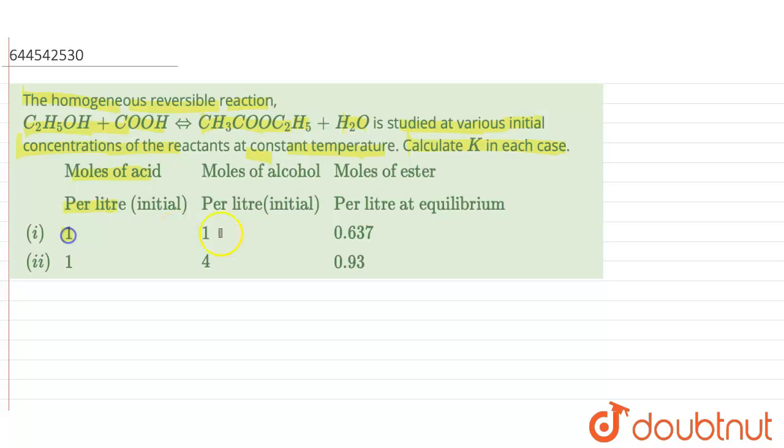When moles of acid per liter is 1 and moles of alcohol is 1, giving moles of ester as 0.637. And in the second case, moles of acid is 1, moles of alcohol is 4, and moles of ester per liter at equilibrium is 0.93.